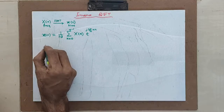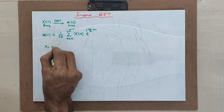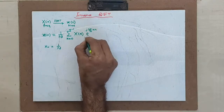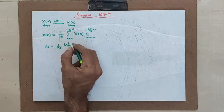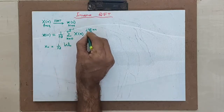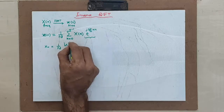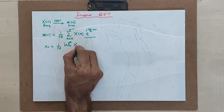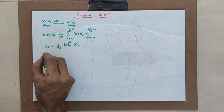The same formula, if you want to convert it into matrix form, you can write it like this: x of n is equal to 1 over N times the twiddle factor matrix, which you can write as W_N. And because instead of minus j there is now plus j, it is W_N conjugate, multiplied by x of k. If I expand this matrix formula, it looks like this.